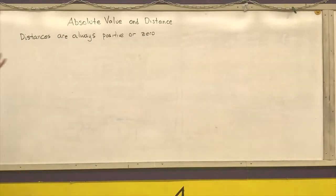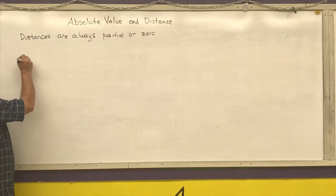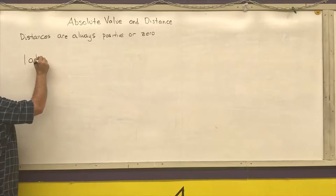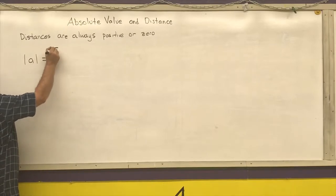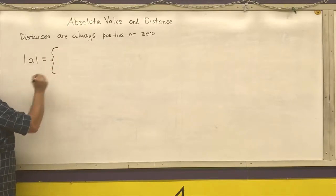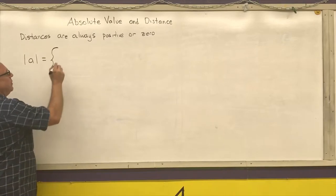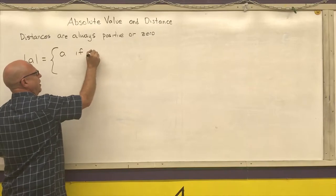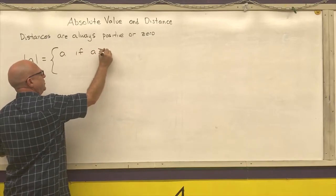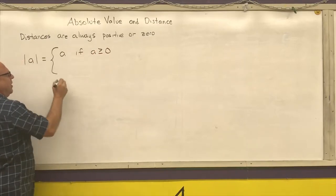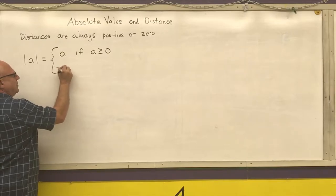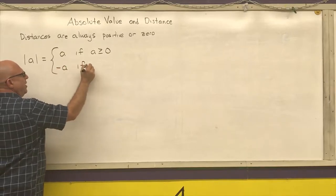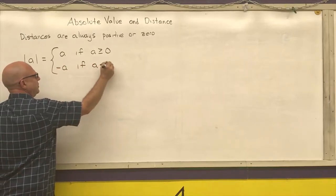Okay, so let's talk about absolute value. The absolute value of a number A is equal to two different cases. It's equal to itself if A is greater than or equal to zero, and it is its opposite if A is less than zero.